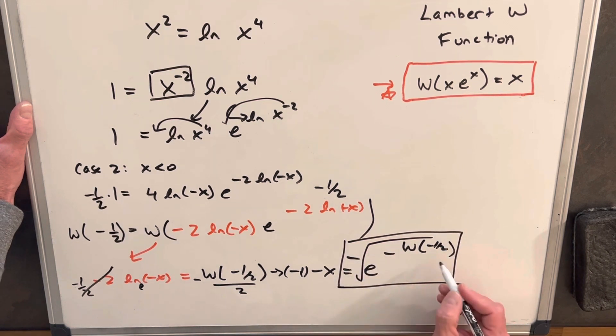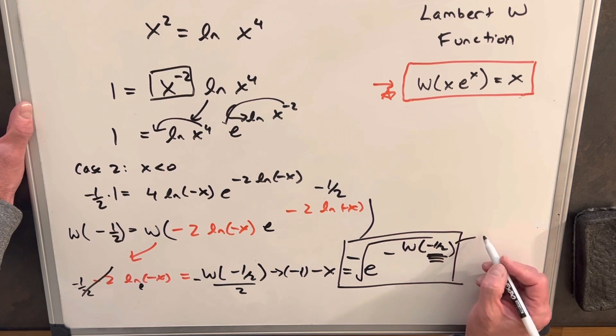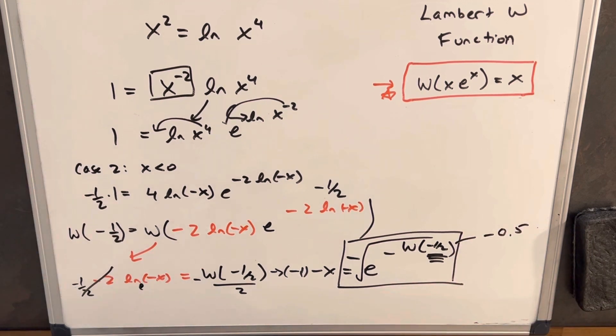But what you notice is we run into the exact same situation again here. When we go to calculate this, our Lambert W function is this is minus 0.5, and we need to get a real solution.